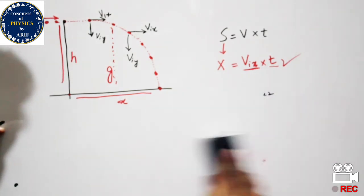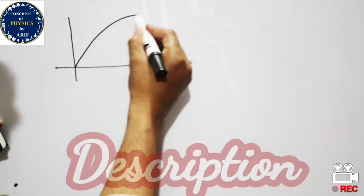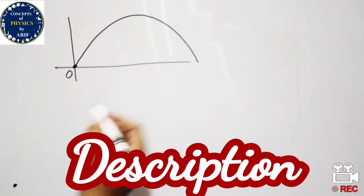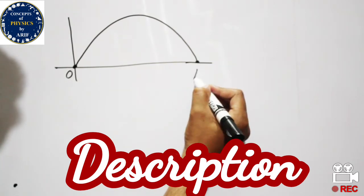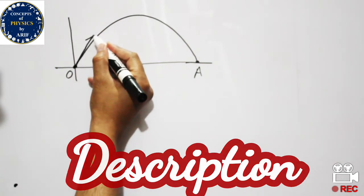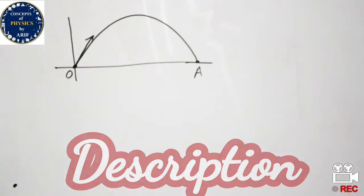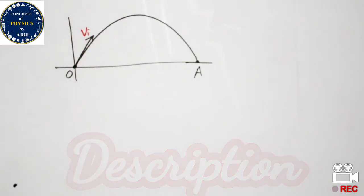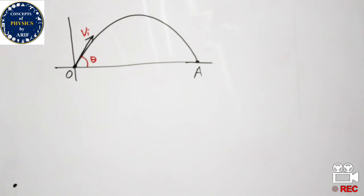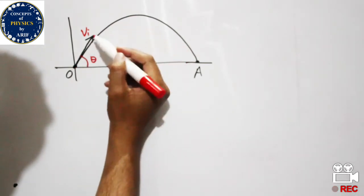In order to study the motion or behavior of an object in projectile motion, consider a ball hit from point O, which lands on the ground at point A. The initial velocity Vi is launched at an angle theta from the horizontal. To study the behavior of this ball, we need to resolve this velocity into its rectangular components.